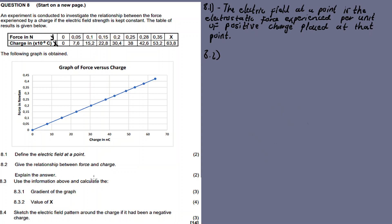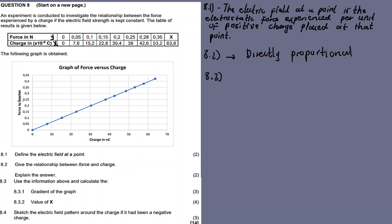8.2: Give the relationship between the force and the charge. They are directly proportional. The straight line passes through the origin, so this is direct proportion. If charge increases, the force increases. That's direct proportion.